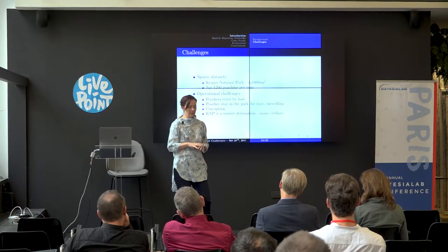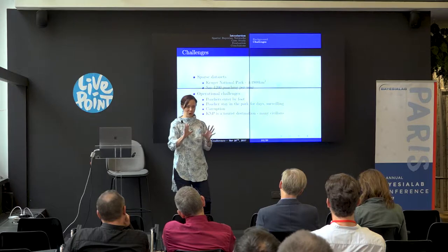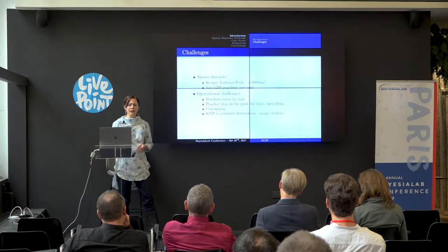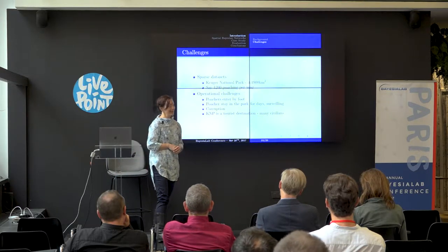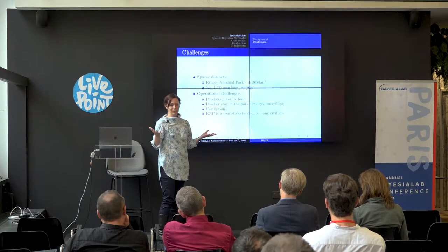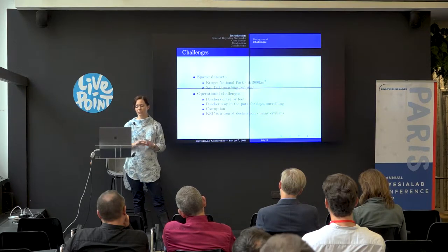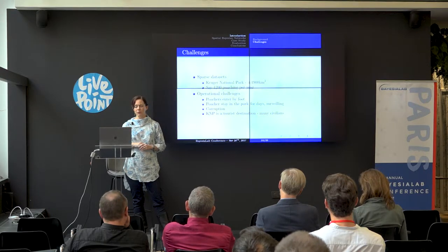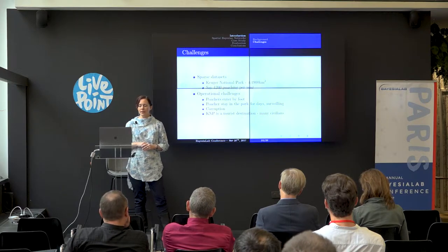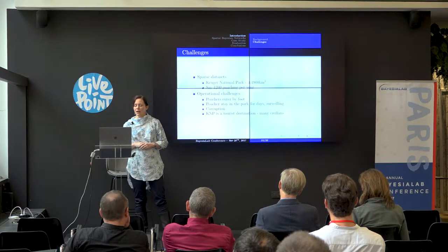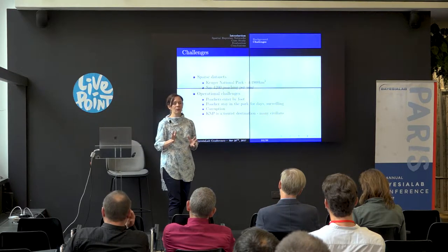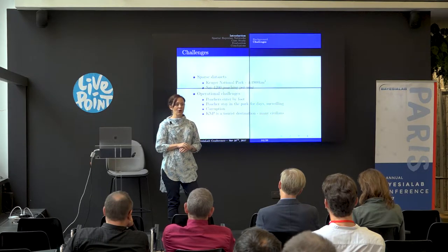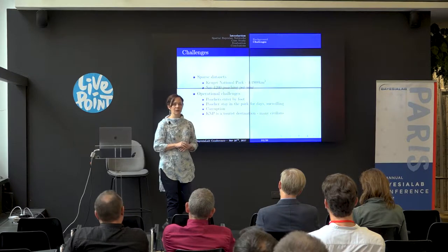We scope our problem within the boundaries of the Kruger National Park. The challenges are pretty much the same as others face: we have this large area of plus-minus 19,000 square kilometers. They estimate more or less 1,200 poachers per year, and given the size, that results in a very small dataset.